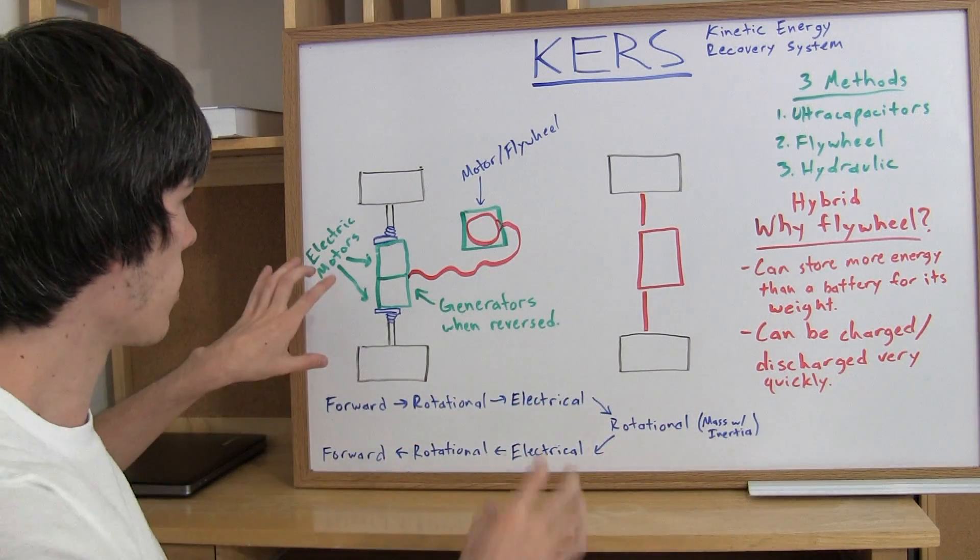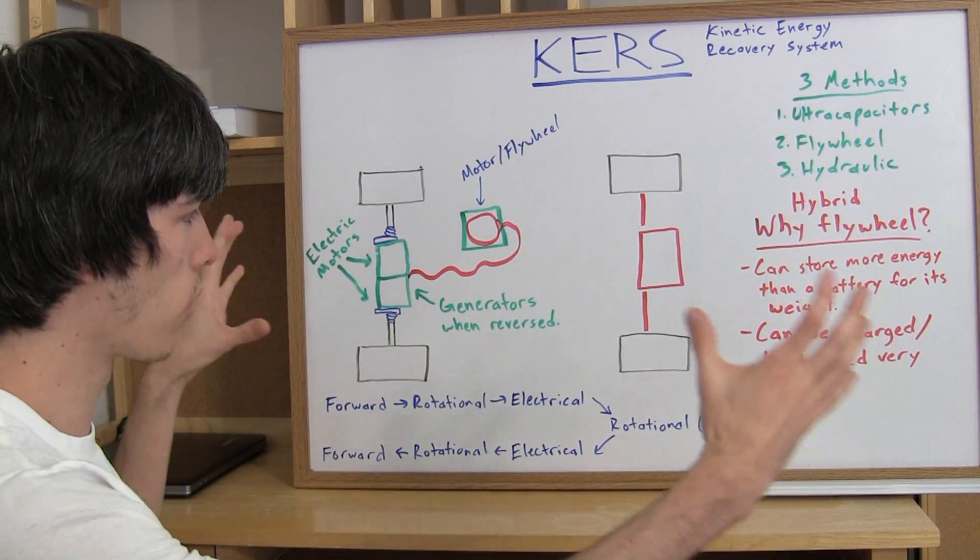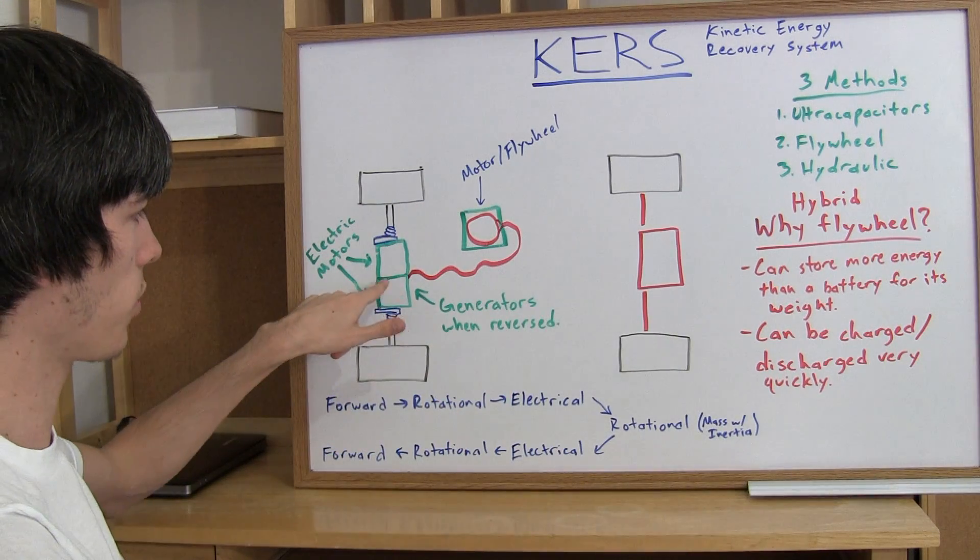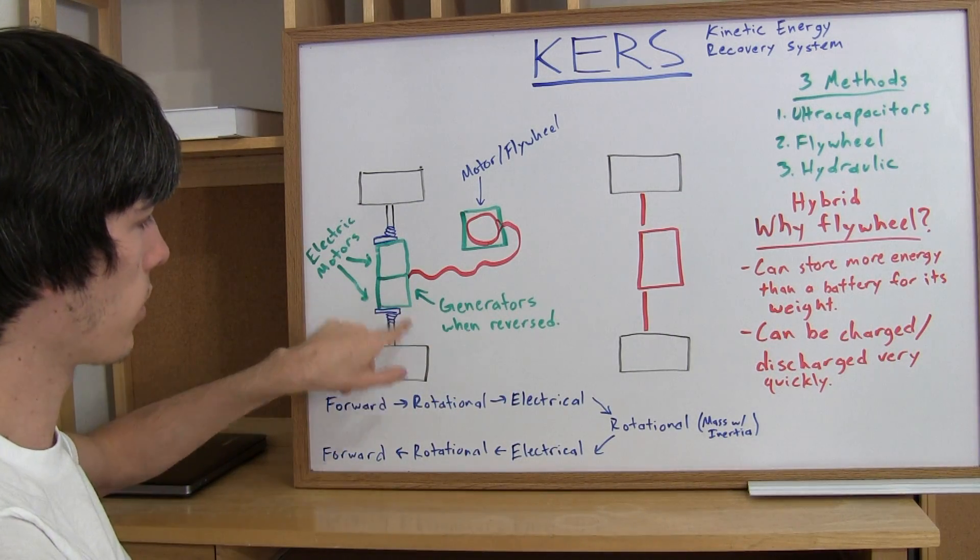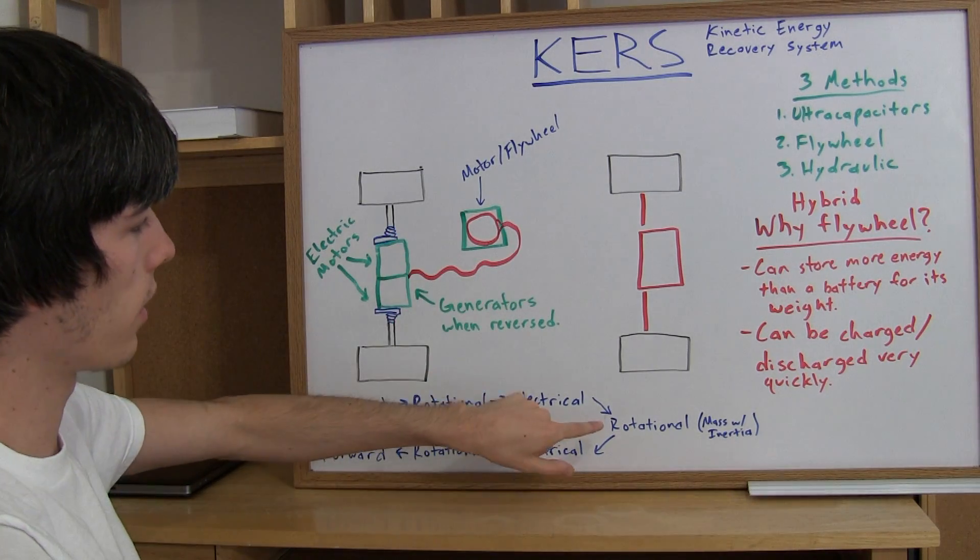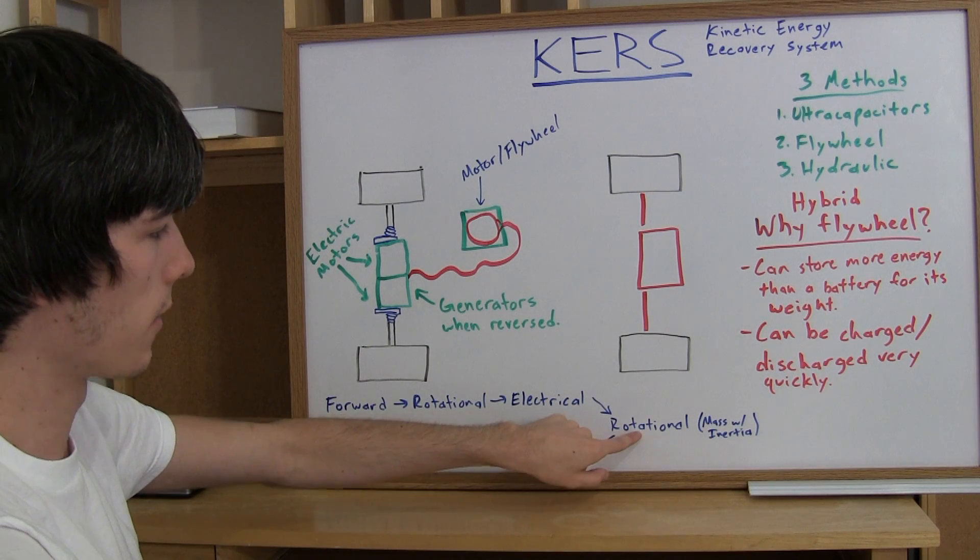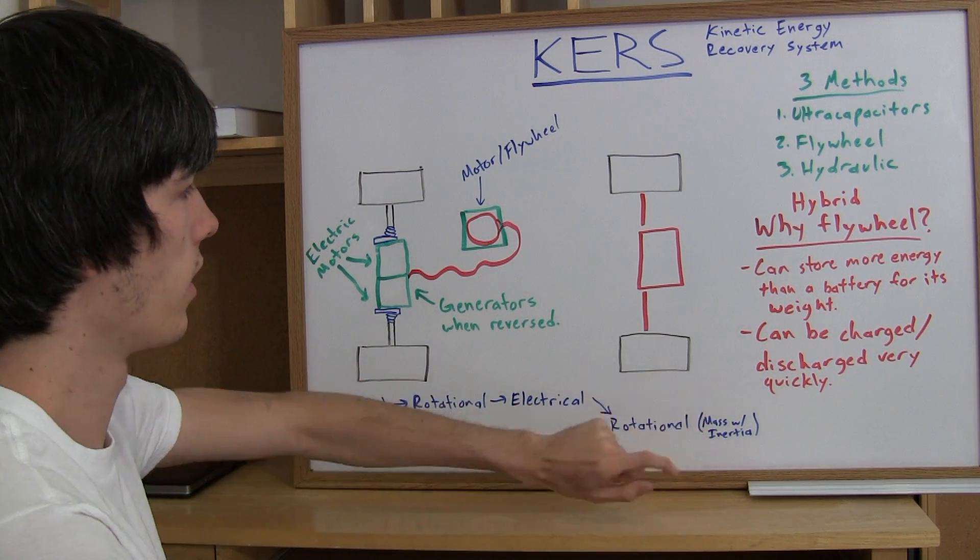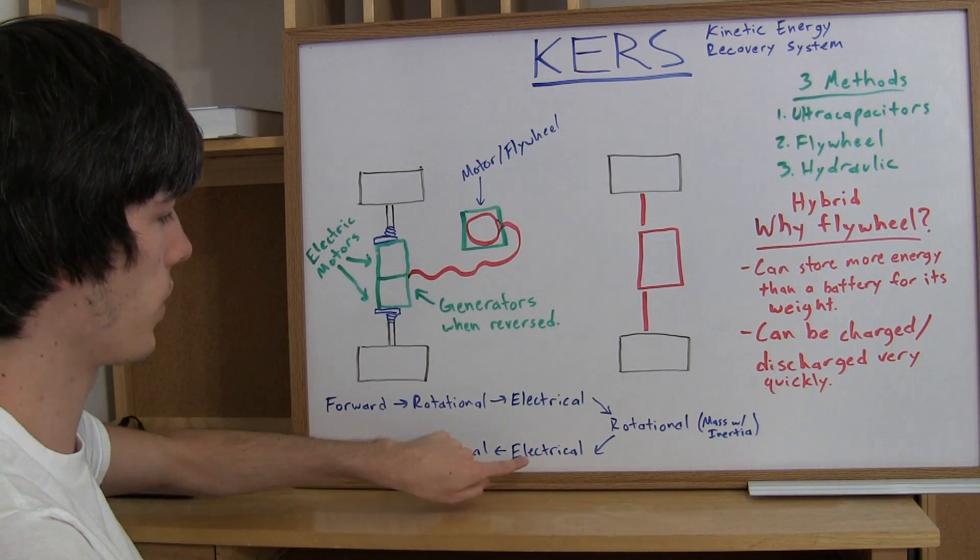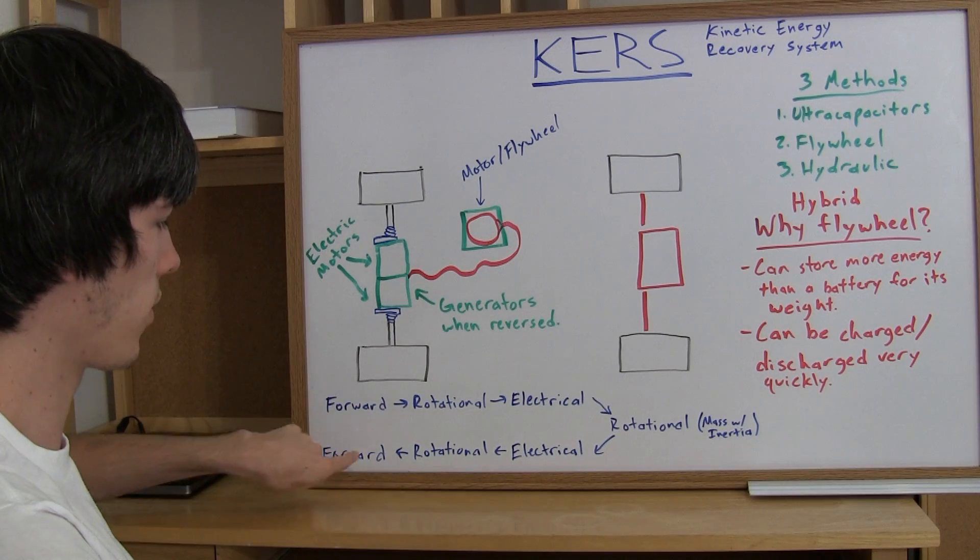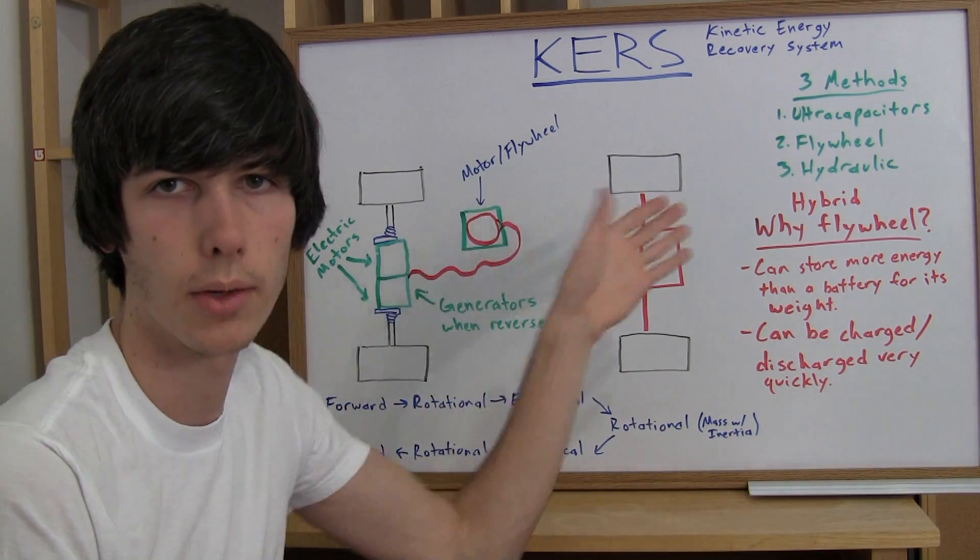Basically what's going on is you're turning that forward energy of the car into rotational energy when it spins up these motors. That rotational energy turns into electrical energy, it sends a current to this motor or flywheel, that spins up the flywheel, and then this just stays rotating. Then you can activate it, turn it back into electrical energy, turn that into rotational energy to rotate these motors, and turn that back into forward momentum to accelerate your car.